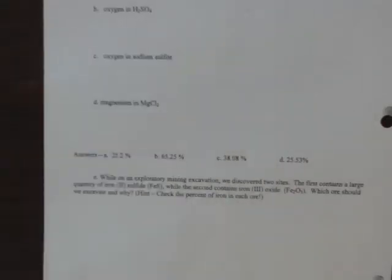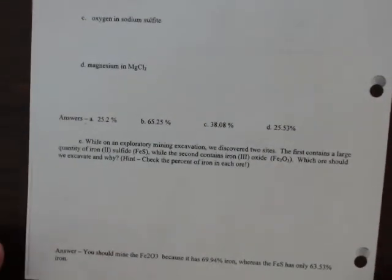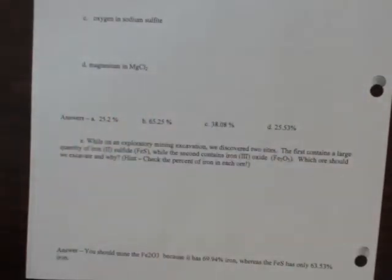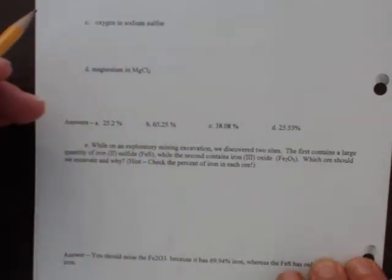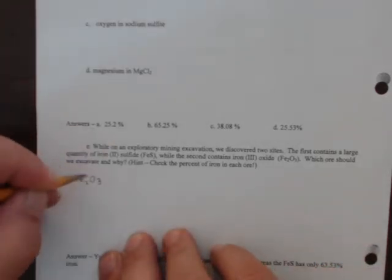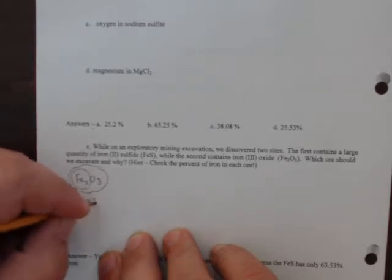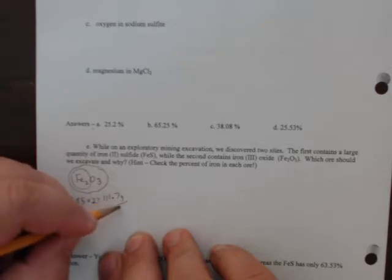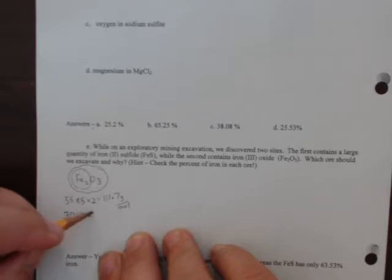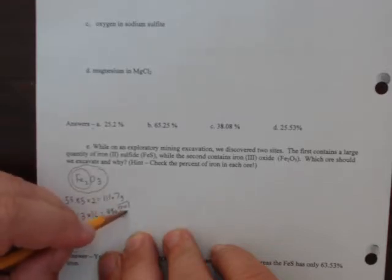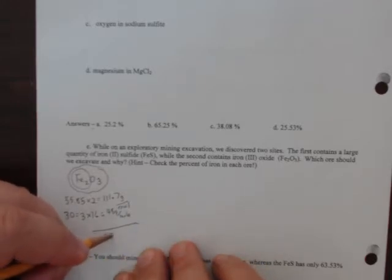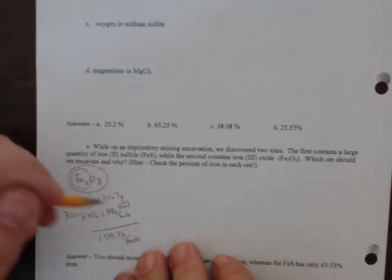Let's look at this bottom problem that a lot of people struggle with. On an exploratory mining excavation, we discover two sites: the first contains a large amount of iron(III) oxide (Fe₂O₃), the second contains iron(II) sulfide (FeS). Which should we excavate and why? First, check what percent each compound is iron. For Fe₂O₃: two irons = 2 × 55.85 = 111.7 g/mol; three oxygens = 3 × 16 = 48 g/mol; total = 159.7 g/mol.